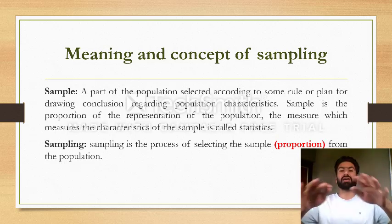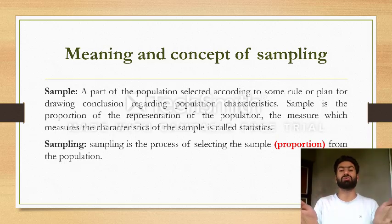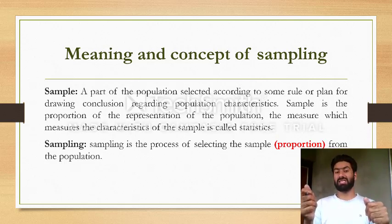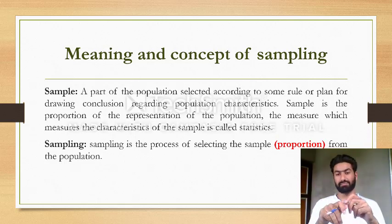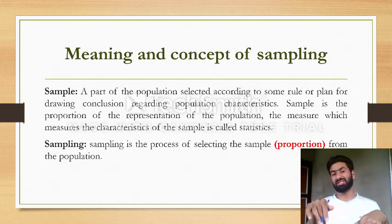For example, secondary school students include students of any state, district, or country — that is the entire population. But when we have to research on the entire population, we take only a proportion which represents the whole state, district, or country, because working on the entire population would be too large and uncountable. So we take a sample that represents the whole population correctly.